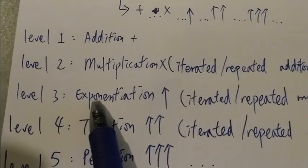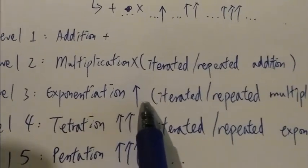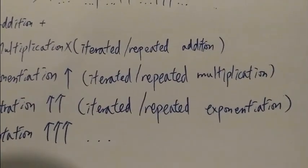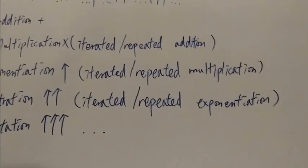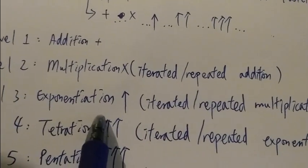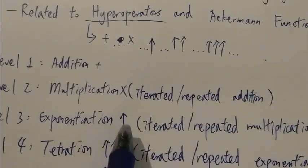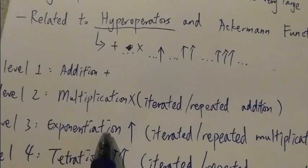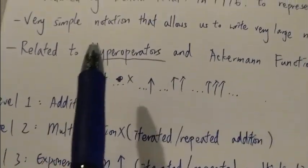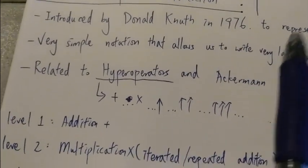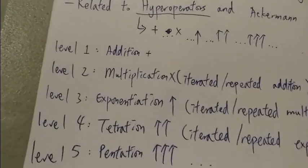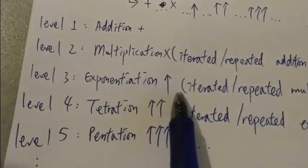Level 3 is exponentiation, which is iterated or repeated multiplication. For example, 3 times 3 times 3 is just equal to 3 to the power of 3. For exponentiation, we can use the up arrow notation. One arrow means exponentiation. The Knuth's up arrow notation starts at exponentiation. With just one arrow, it means exponentiation.